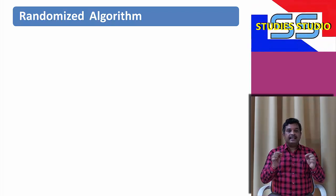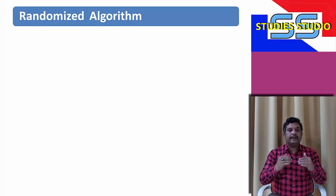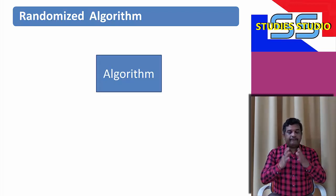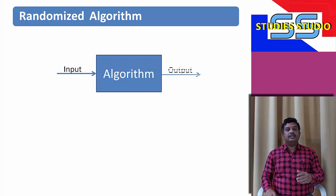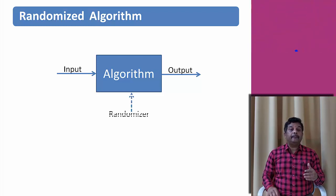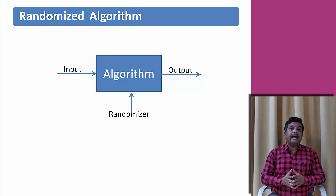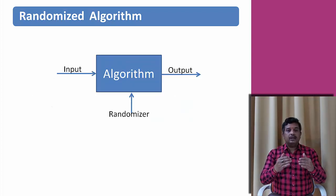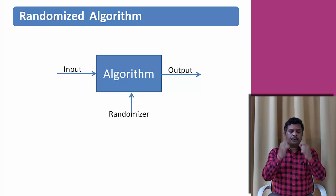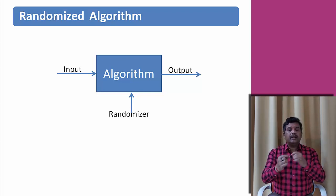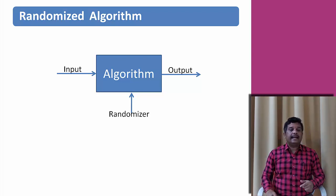A randomized algorithm is one that makes use of a randomizer. Some decisions in the algorithm depend on the output of the randomizer. Given the same input, the output depends on the randomizer's output — we call such an algorithm a randomized algorithm. For that, we need a random number. Basically a randomizer is a program, and since it is a program it has to be deterministic, so the value it generates is called a pseudo-random number, which is not an exact random number.